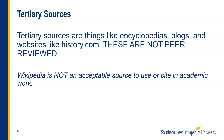Let's talk about tertiary sources. Tertiary sources are things like encyclopedias, blog posts, and websites like history.com. The distinguishing characteristic between tertiary and secondary is that tertiary sources are not peer reviewed and therefore are not considered scholarly sources. These are not acceptable sources to use or cite in your academic work.